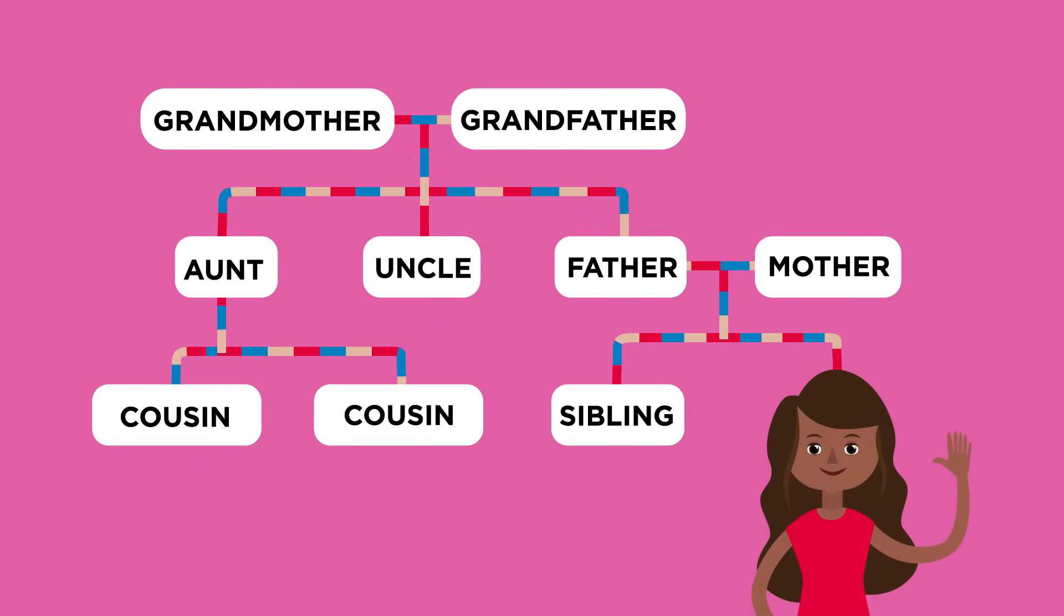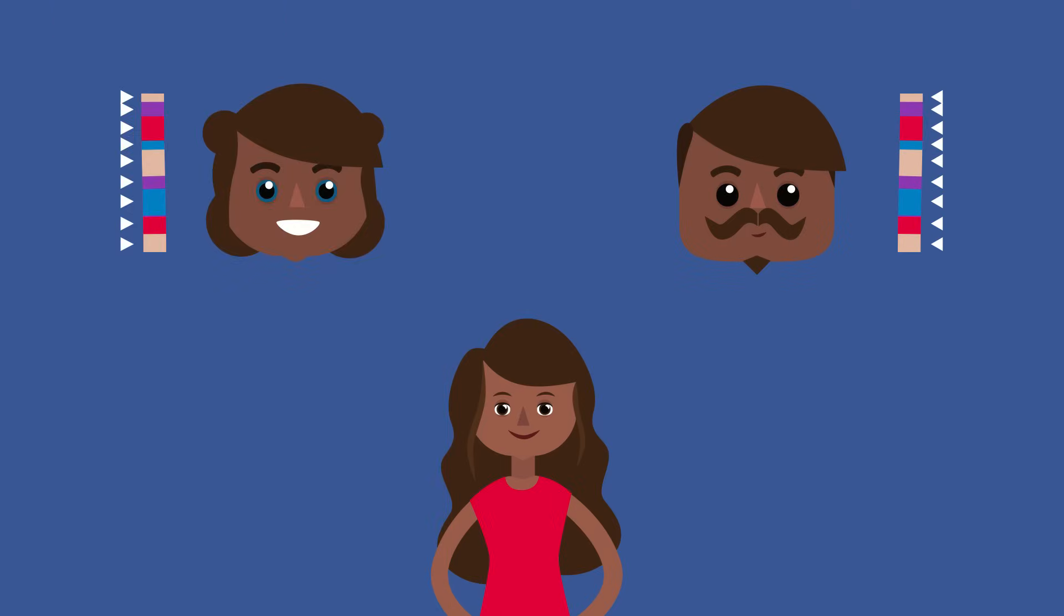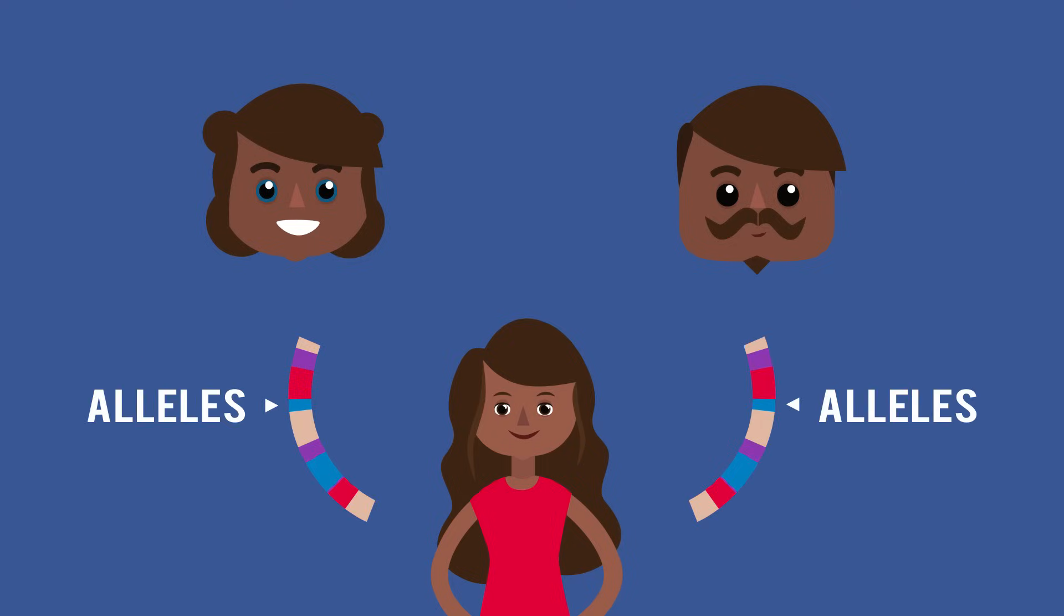Well polydactyly is an example of a genetic disorder. It is inherited. You inherit genes from your parents and you have two copies of each gene, one from your mother and one from your father. Genes come in different forms called alleles. Alleles may be recessive or dominant.